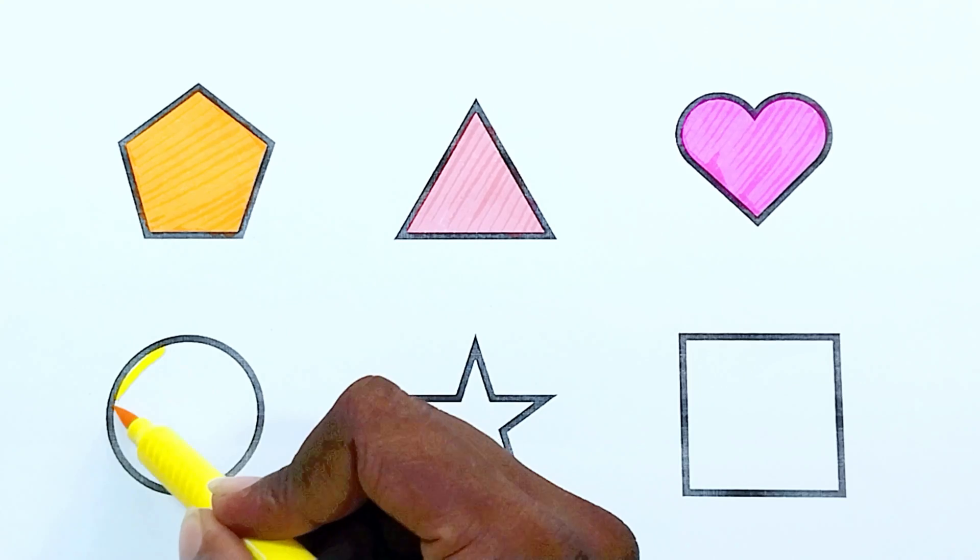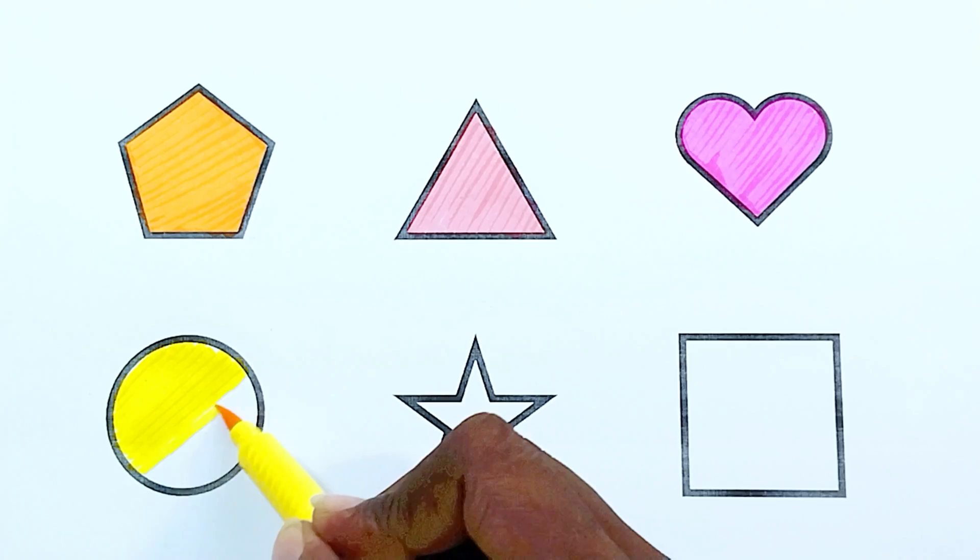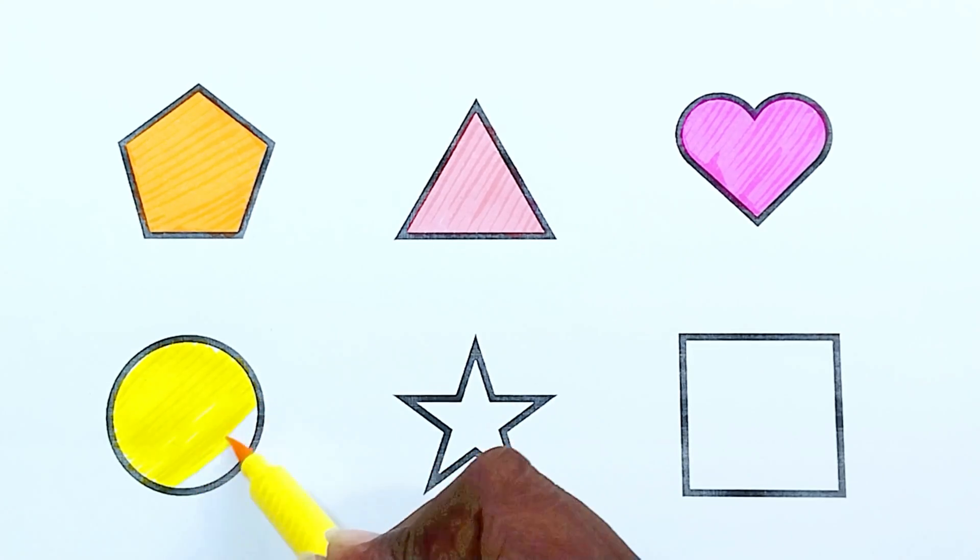Yellow color. Yellow color circle. The shape is yellow color circle.